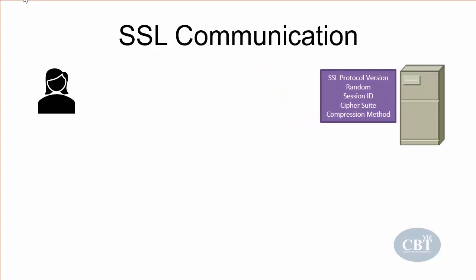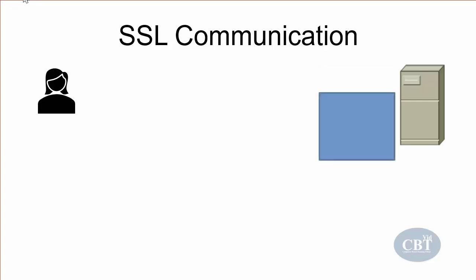When the server receives that message, it responds back with a server hello. The server says the SSL protocol version is good and acknowledges it. The server also generates its own random value to be used as a nonce and adds a session ID. Then the server picks an encryption, hashing, and key exchange algorithm from the list that the client sent and replies back with its selected cipher suite.